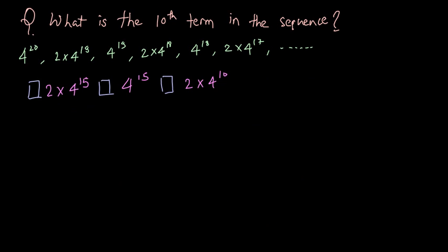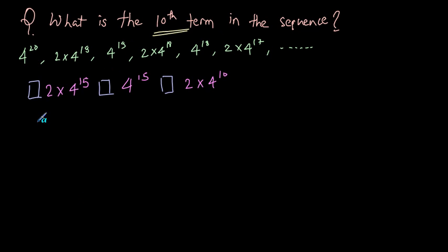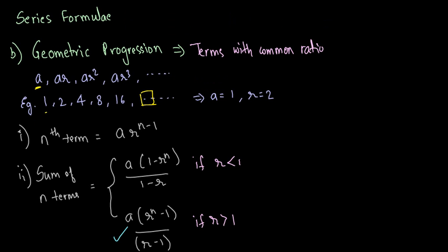Now let us solve a more complicated problem. You have to find out the 10th term in this sequence, which is quite tricky. Just use the formulas. We have been asked the 10th term, so n will be equal to 10. The formula for the nth term is a into r raised to n minus 1.